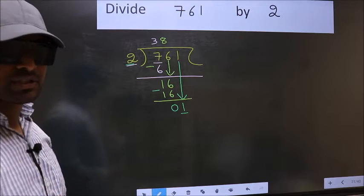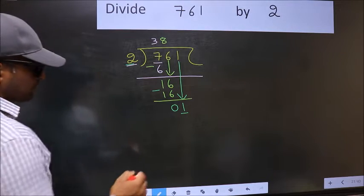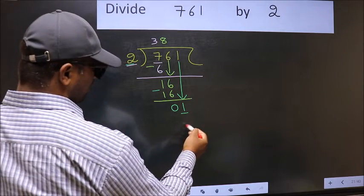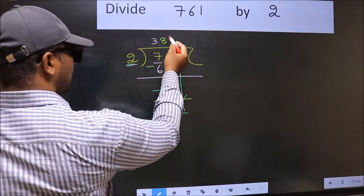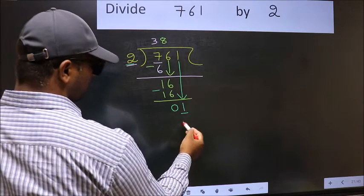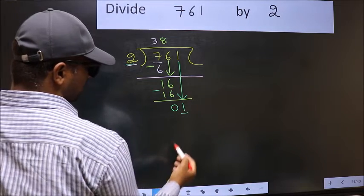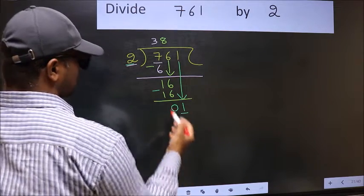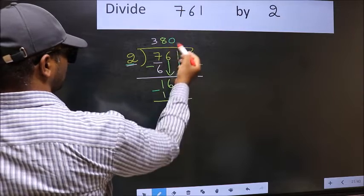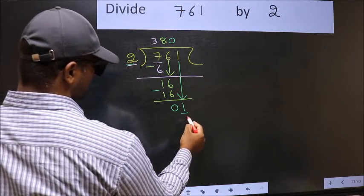Instead, what you should think of is, what number should we write here? If we take 1, we get 2 here. But 2 is larger than 1. So, what we do is we take 0. So, 2 into 0 is 0.